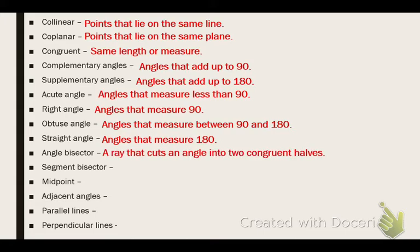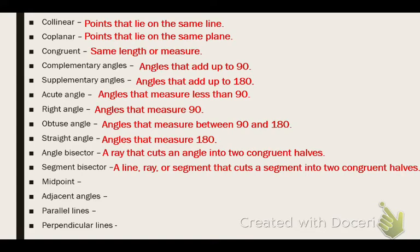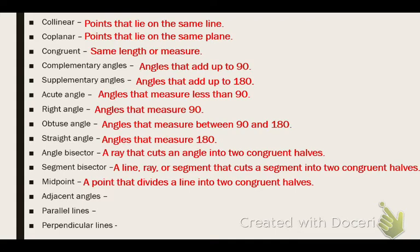An angle bisector is a ray that cuts an angle into two congruent halves. A segment bisector is a line, ray, or segment that cuts a segment into two congruent halves. A midpoint is a point that divides a line into two congruent halves. Adjacent angles are angles that share the same vertex and side. Some of you would say 'share a wall,' which is fine, but just make sure it has the word 'vertex' in there.